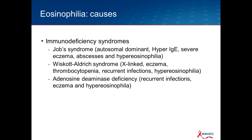Immunodeficiency syndromes associated with eosinophilia are usually recognized in childhood: Job's syndrome, Wiskott-Aldrich syndrome, which is X-linked, and ADA deficiency. The mechanism for hypereosinophilia in those cases is not fully understood, but it is an observed condition — and again, usually picked up in childhood, so not the typical purview of internists.